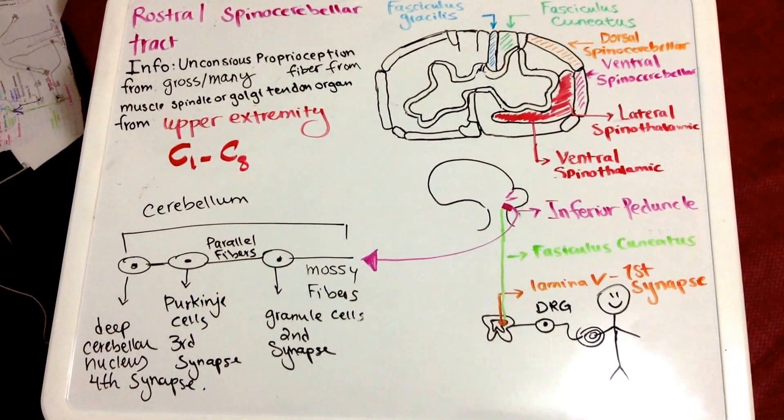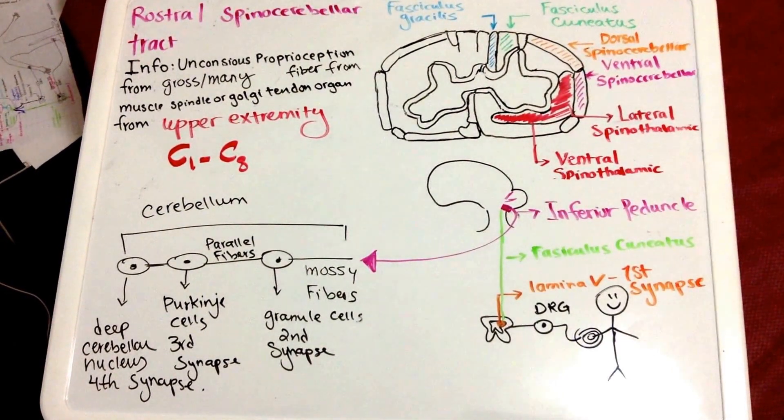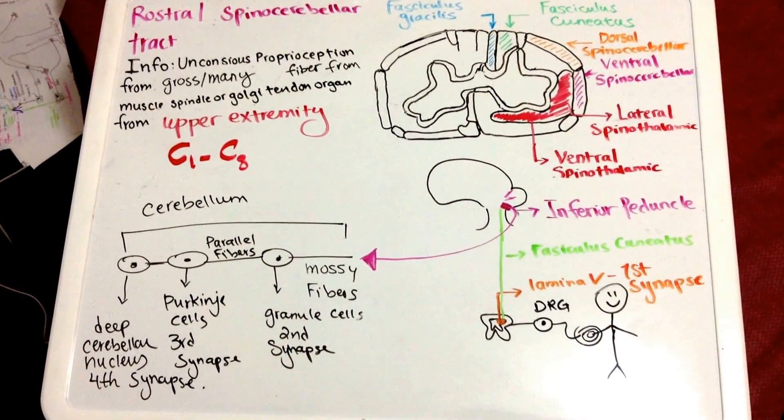The information is sent to the Purkinje cells via parallel fibers. You will have your third synapse in the Purkinje cells.